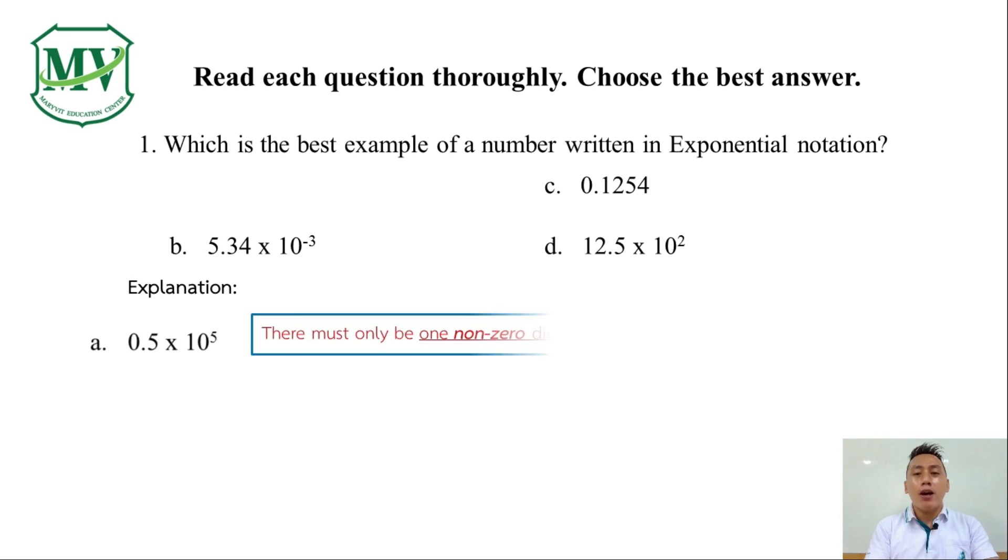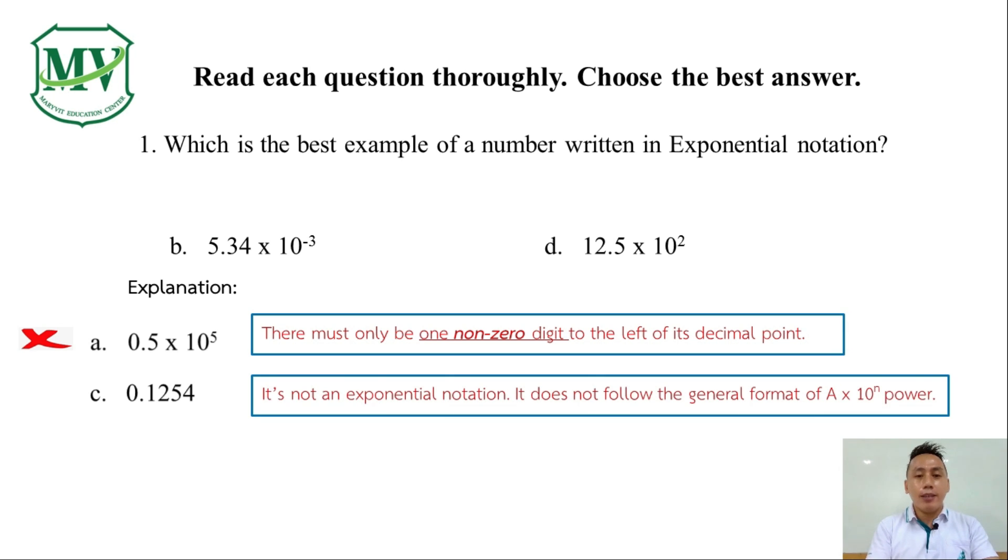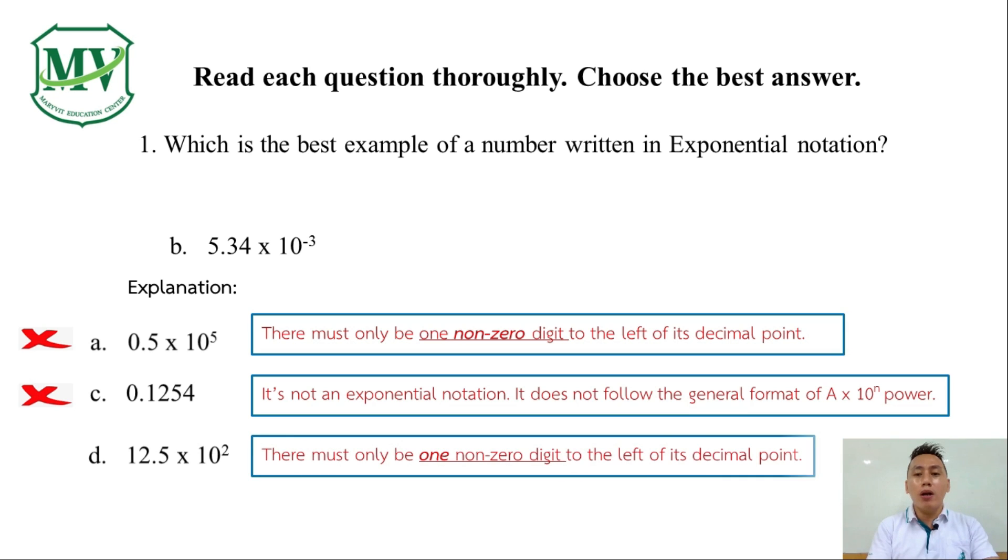Remember, there must only be one non-zero digit to the left of its decimal point. Keyword, non-zero. Therefore, choice A is wrong. Is it c? 0.1254 is not an exponential notation. It does not follow the general format of a x 10 raised to the power of n. So, this one is also wrong. Is it d? Again, the rule says that there must only be one non-zero digit to the left of its decimal point. Choice D has two. So, this letter is also wrong.